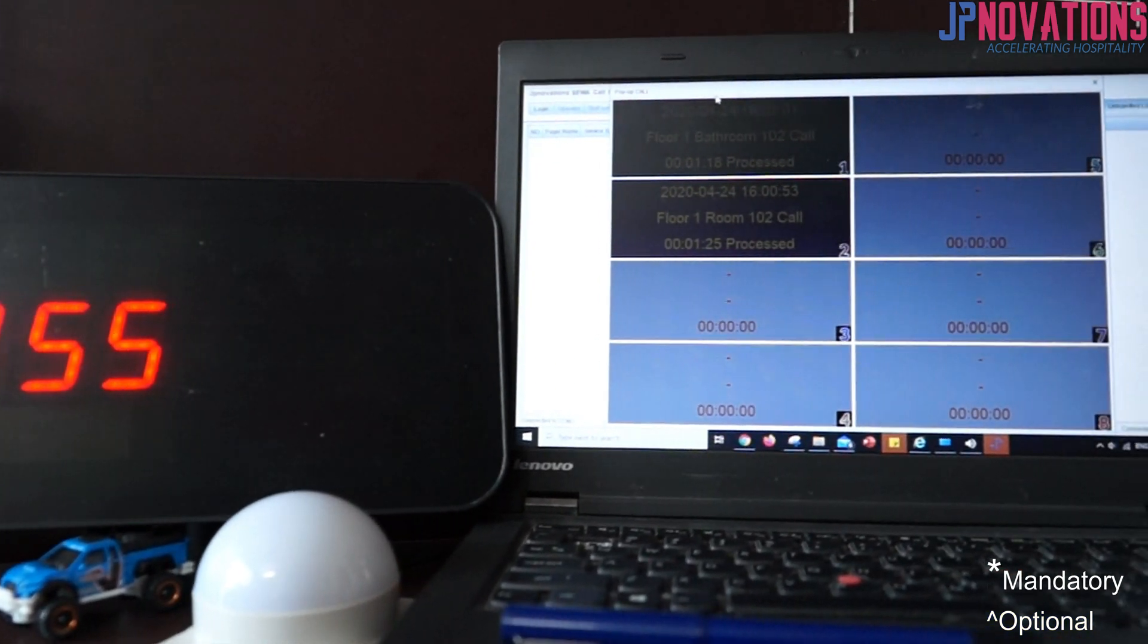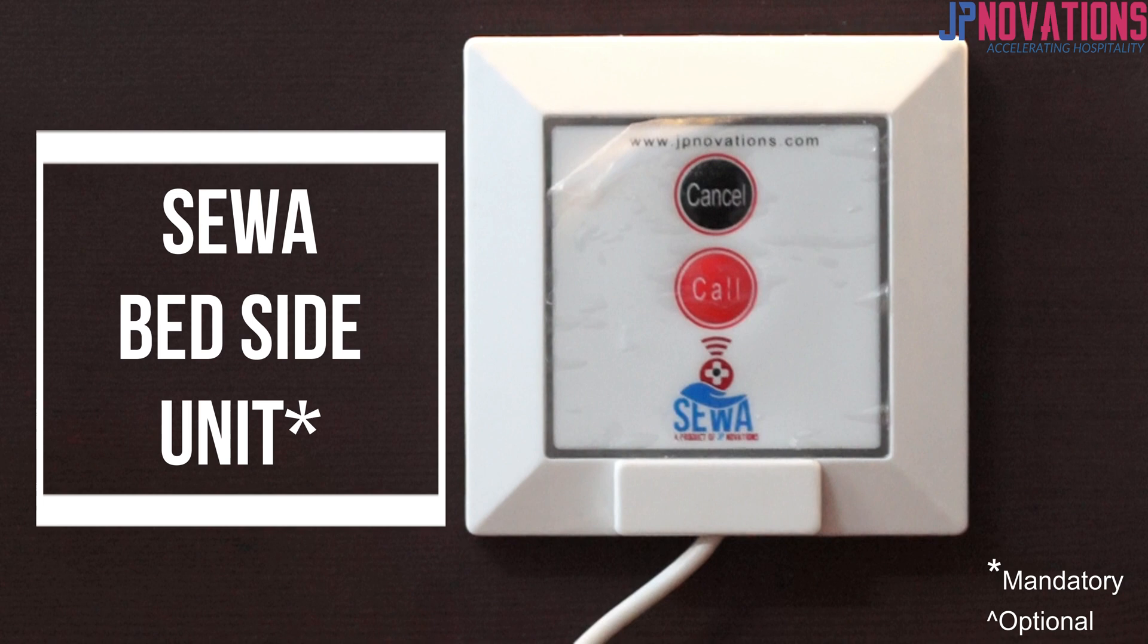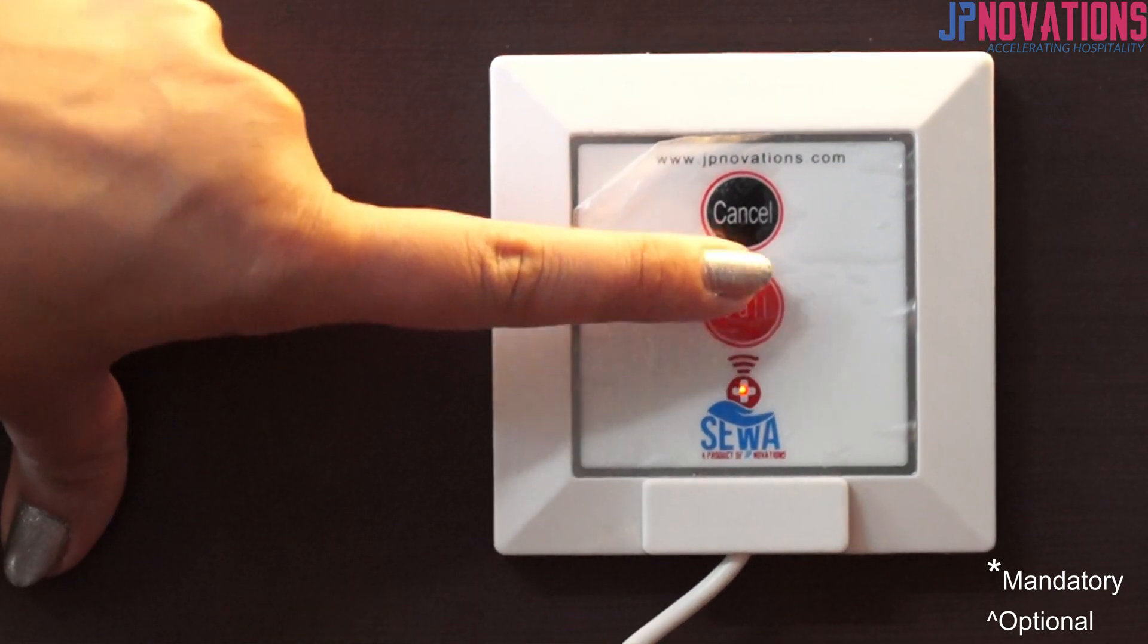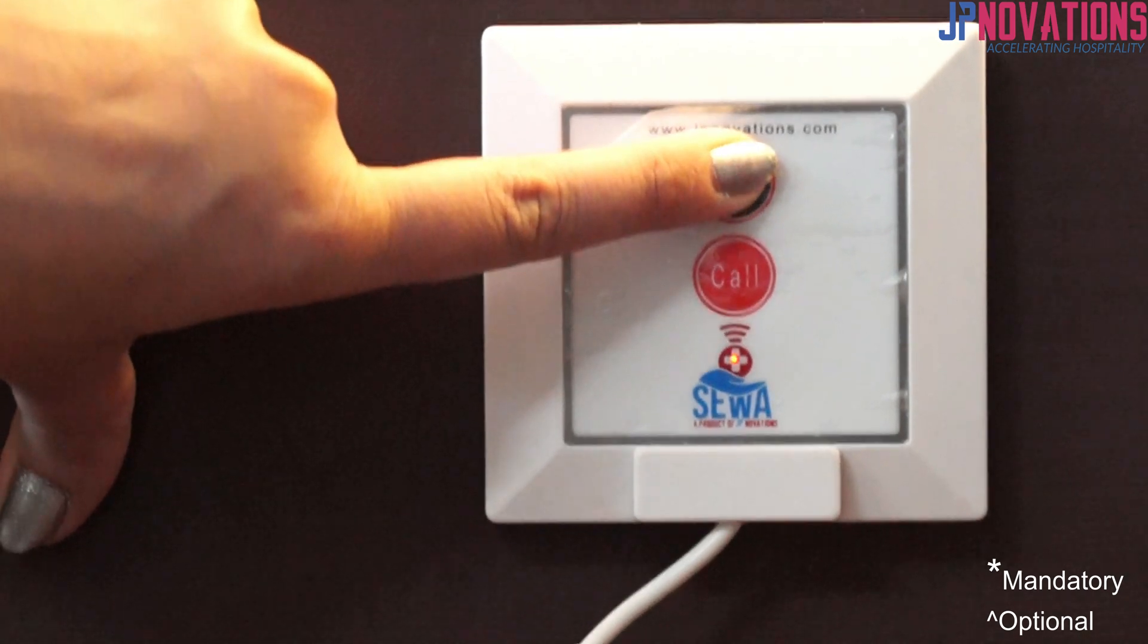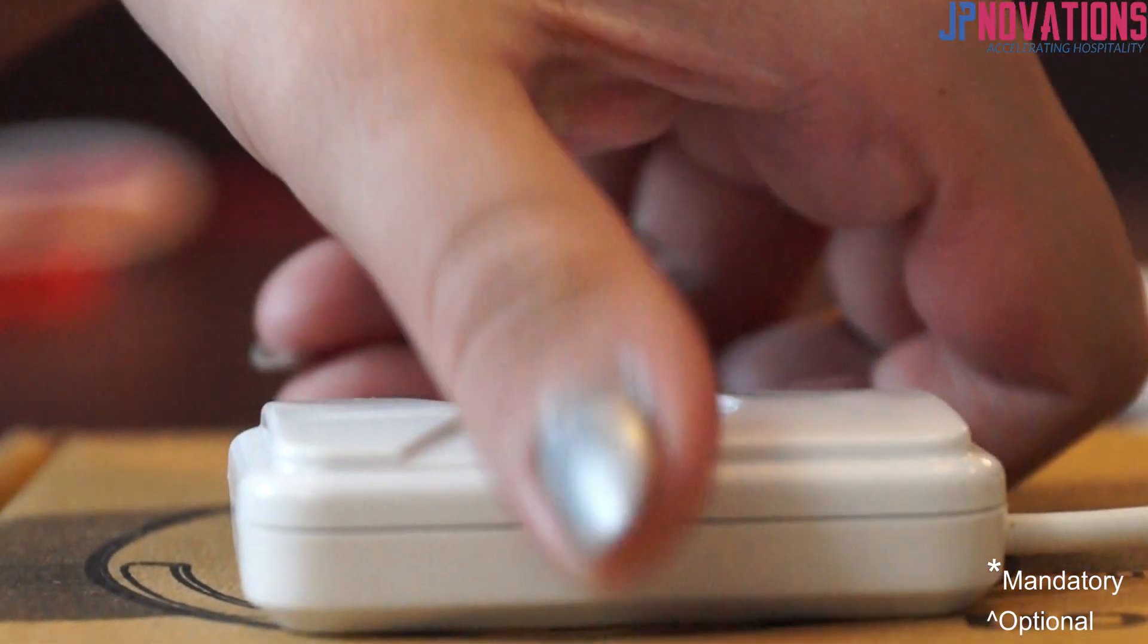First we start with the Sever bedside unit. Sever bed unit has two buttons: one to generate the call and a cancel button to mark the call has been attended. Also the unit is equipped with 1.2 meters of long flexible cord with a handy call button on the other end to ease the patient to call the nurse while laying down on the bed.